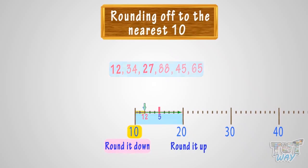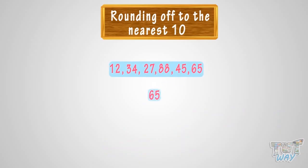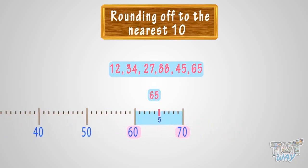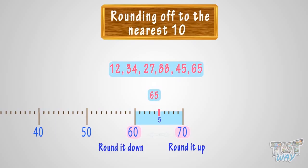Okay, let's take the next number: 65. Where can you fit 65 on this number line? It is somewhere between 60 and 70. Whenever you want to round a number, there are always two options — either we can round it down to 60 or round it up to 70. Think, which option is more apt? Here, 65 is midway between 60 and 70, or it is on the 5 mark.